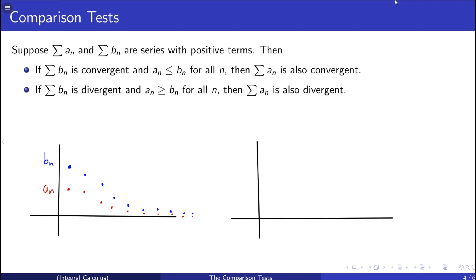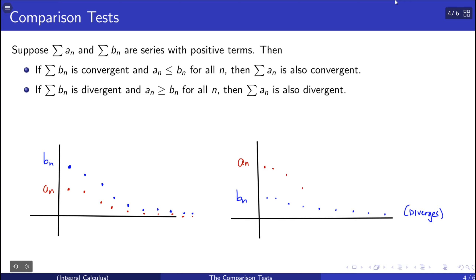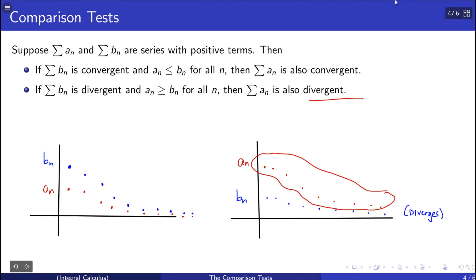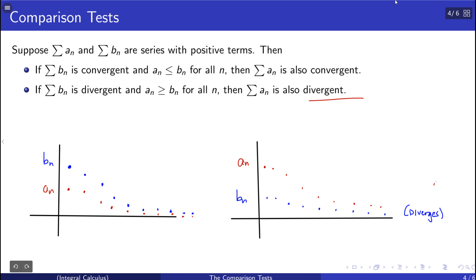On the other hand, we can also use this to conclude divergence. If we know that b sub n diverges — meaning its partial sums blow up to infinity — and if a sub n is even larger than b sub n, then a sub n also has to diverge. There's no way that adding something larger gives you something finite while something smaller blows up to infinity. It's a simple comparison: you're looking at which one is larger and which is smaller and using that to prove convergence or divergence.